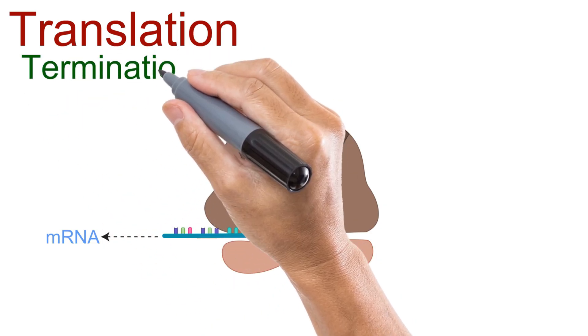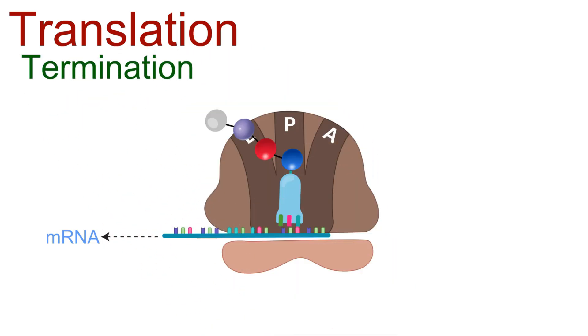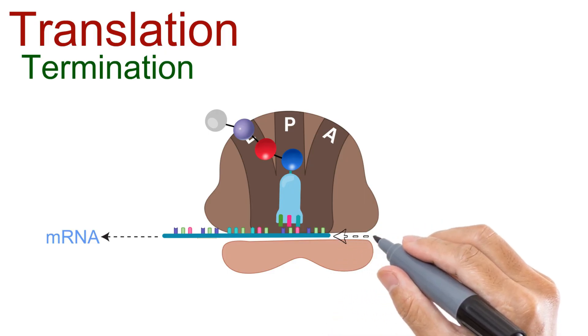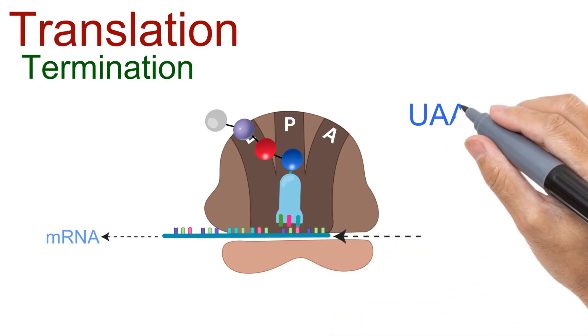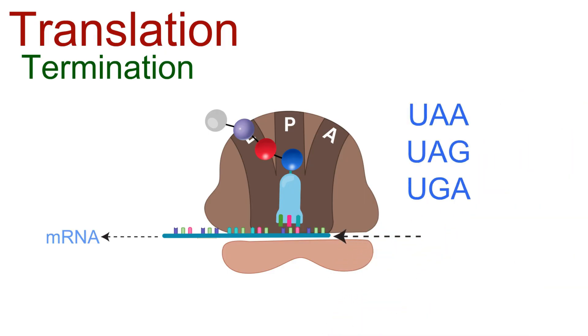Termination is the stage where protein synthesis comes to an end. Here's how it happens. As the ribosome moves along the mRNA, eventually it reaches a stop codon. A stop codon may be one of three. Unlike other codons, these do not code for any amino acid.